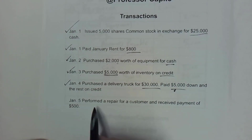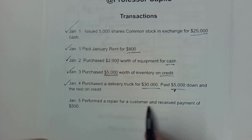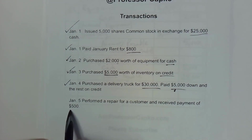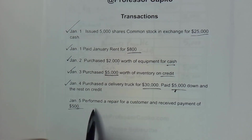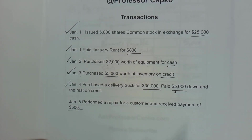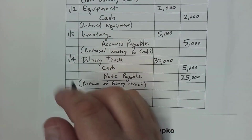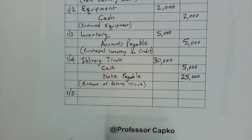The last one occurs on January 5th. We performed a repair for a customer and received payment of $500. So we received cash because there's nothing to indicate that it was a promise to pay — we actually received cash.